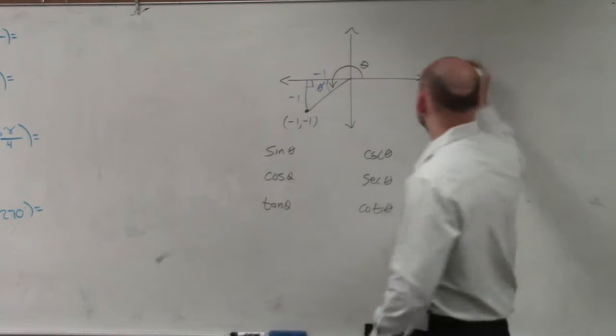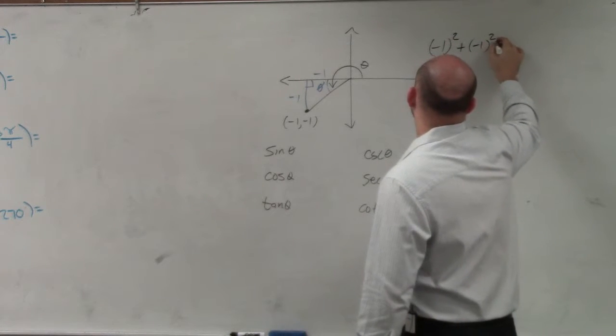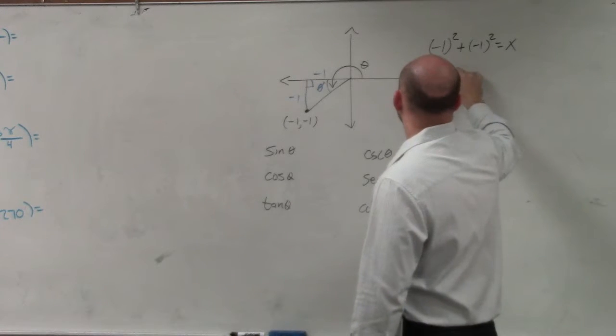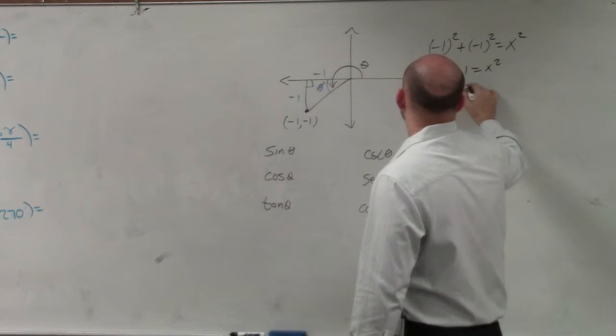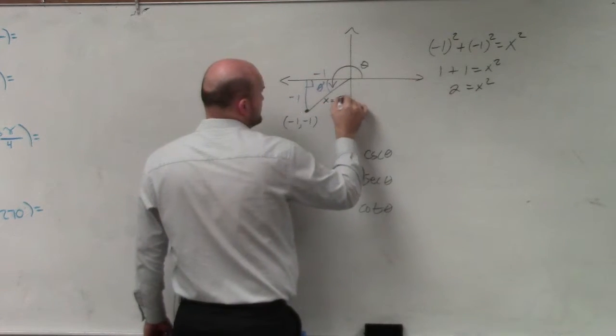Correct? So just doing a quick thing of Pythagorean Theorem. Let's just call that x. So that's 1 plus 1 equals x squared. 2 equals x squared. And we'll just say x equals the square root of 2.